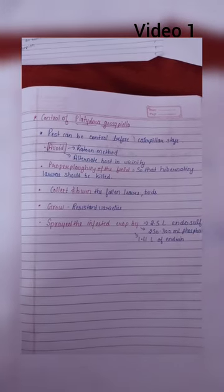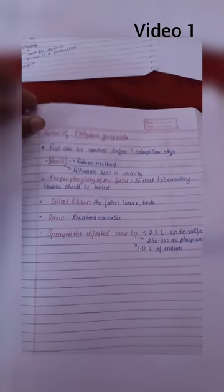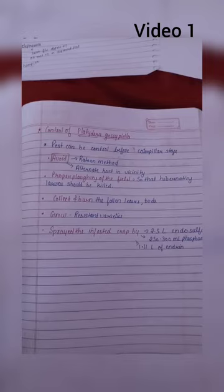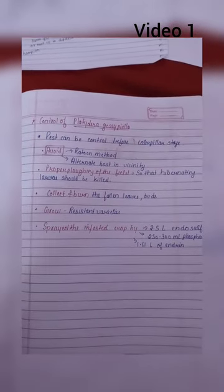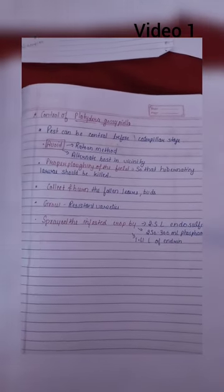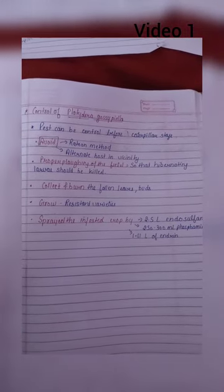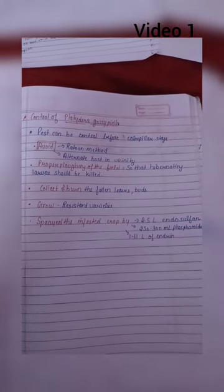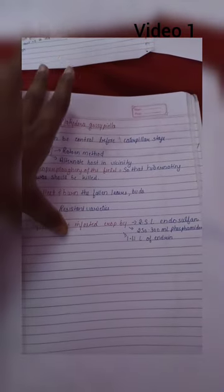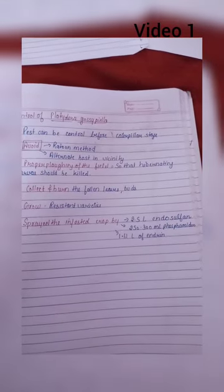So this is the cycle of Platyedra gossypiella. After that, we have to know how to control it. First, the pest can be controlled before the caterpillar stage. We need to avoid the routine method - grow cotton as usual, remove alternate hosts from the vicinity. Do proper plowing of the field so that hibernating larvae should be killed. Collect and burn the fallen leaves and bolls.